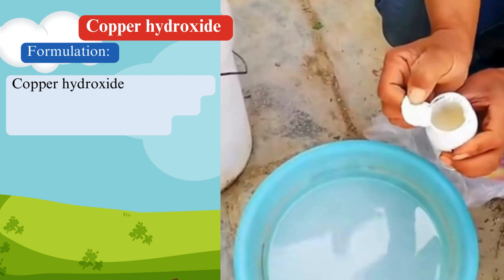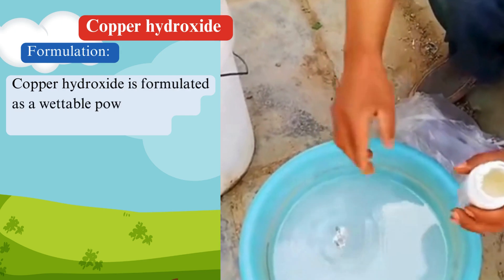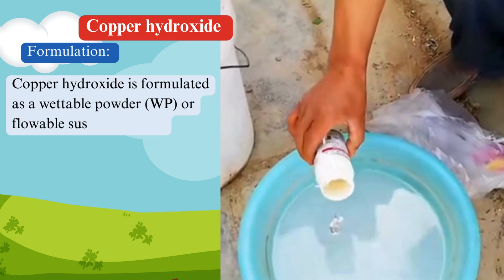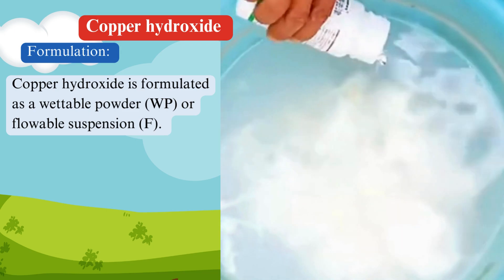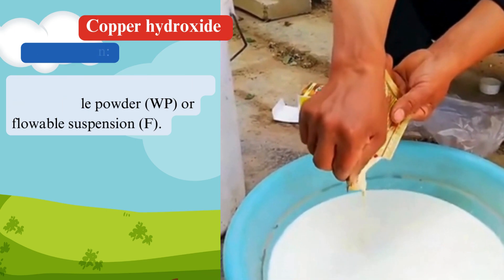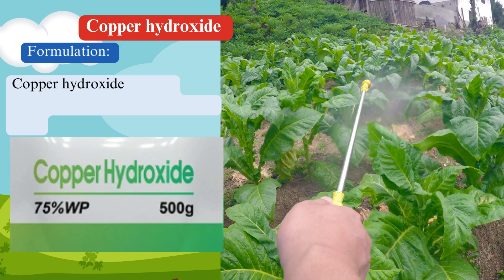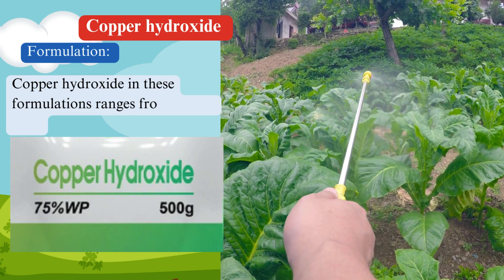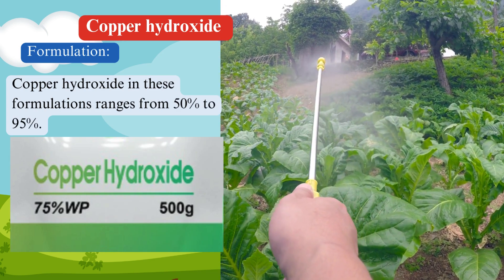Formulation: Copper hydroxide is formulated as a wettable powder (WP) or flowable suspension (F) for ease of application. These formulations allow the copper hydroxide particles to be suspended in water for spray applications. The typical concentration ranges from 50% to 95%, depending on the manufacturer and intended use.